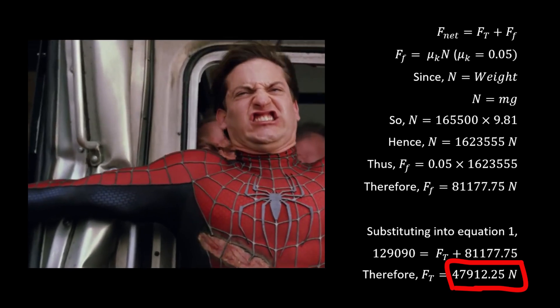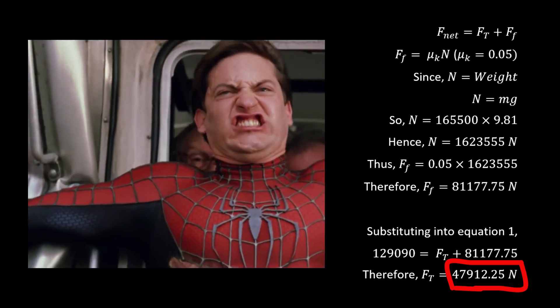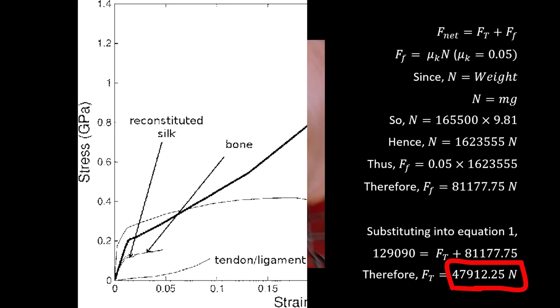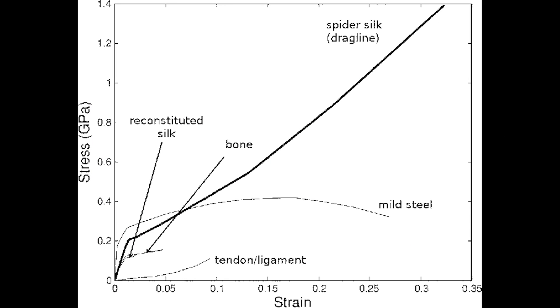After finding this value, we can then subtract it from the net force, giving us the force of tension on the web. Now we know that tensile strength is the max tension that a material can bear before a rupture. And from this stress-strain graph, we know that spider silk has a tensile strength of 1.4 gigapascals.